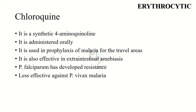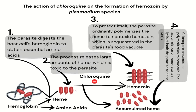The next drug is chloroquine, the most common antimalarial drug. It is a synthetic 4-aminoquinolone administered orally. It is used in prophylaxis of malaria for travelers to endemic areas and is also effective in extra-intestinal amebiasis as discussed earlier. Plasmodium falciparum has developed resistance against chloroquine and it is less effective against P. vivax malaria. The mechanism of action of chloroquine relates to its action on the formation of hemozoin by Plasmodium species.